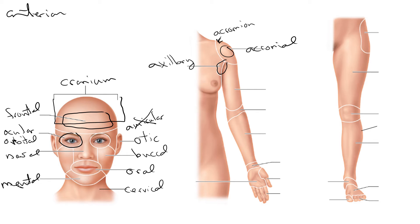Then you have the whole upper limb. The upper part of the upper limb is the brachial region. Then we have the front part of the elbow, and that's referred to as the antecubital region. The elbow as a whole is the cubital region, the front part is antecubital, and the posterior part is the olecranal region.